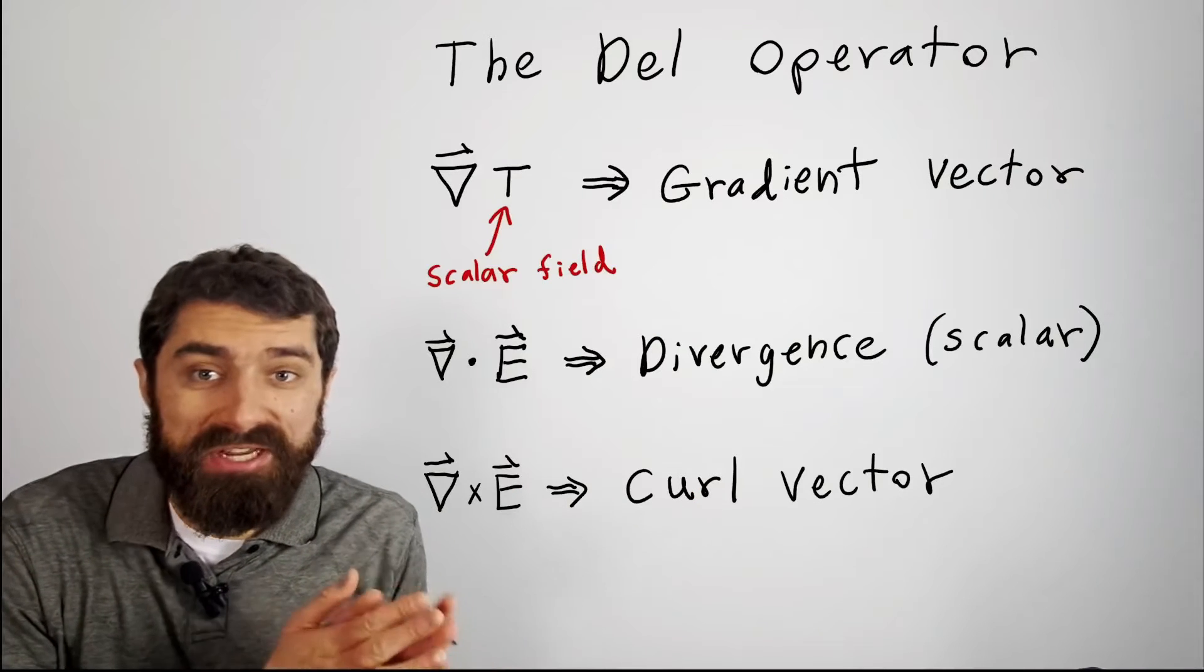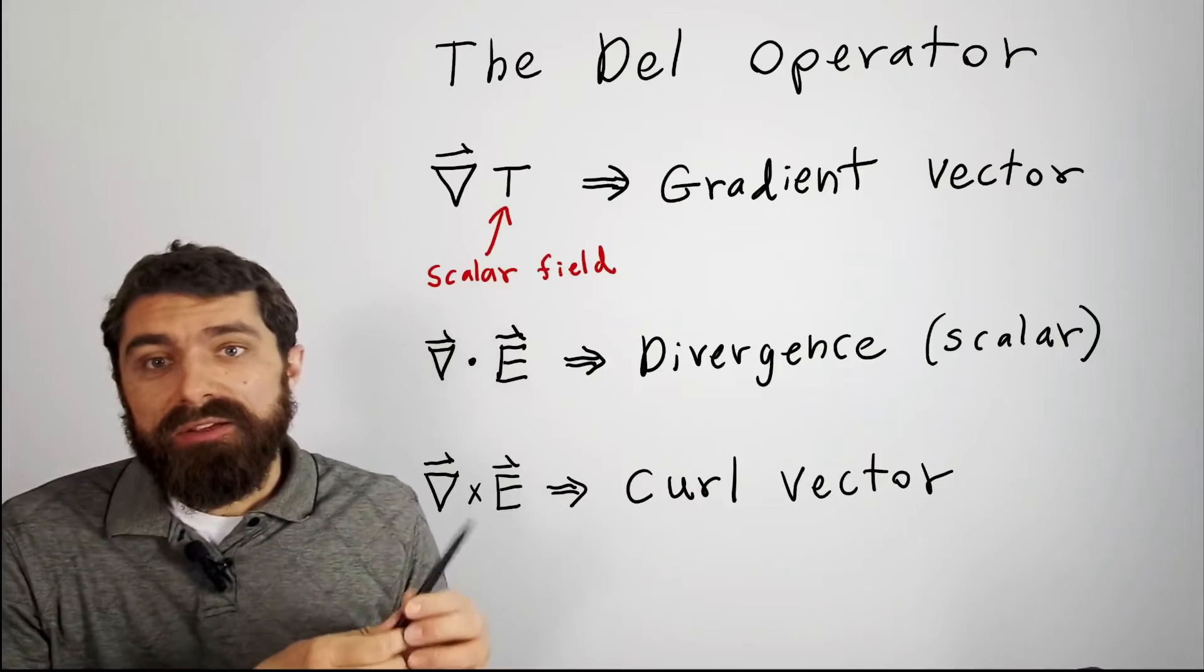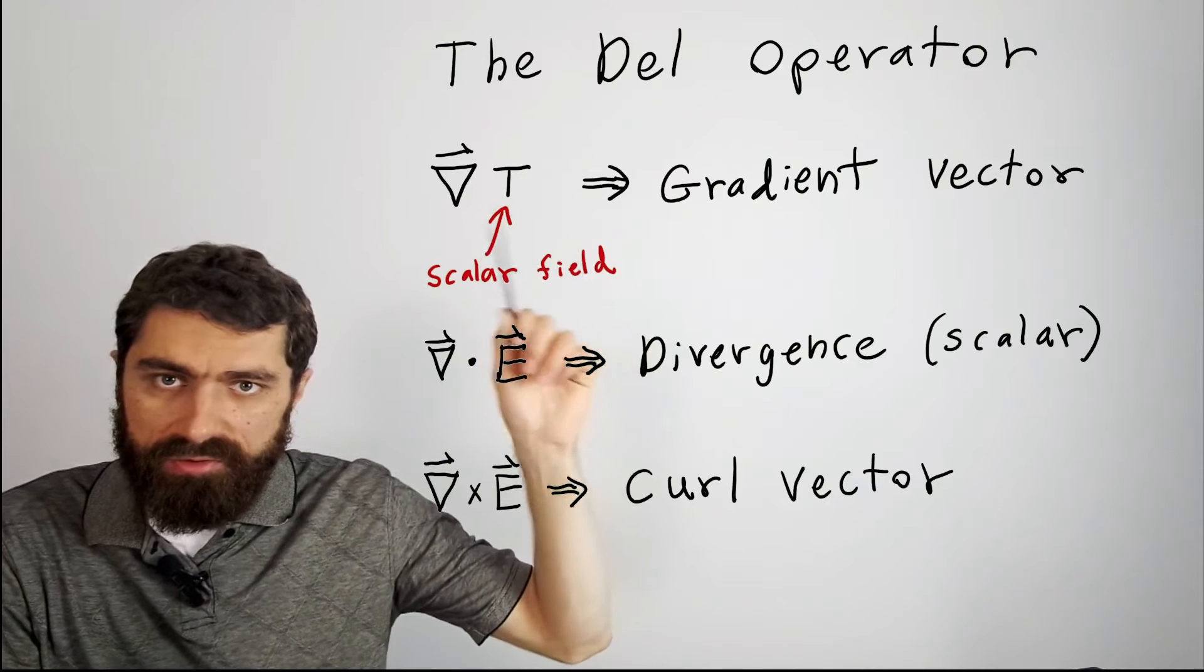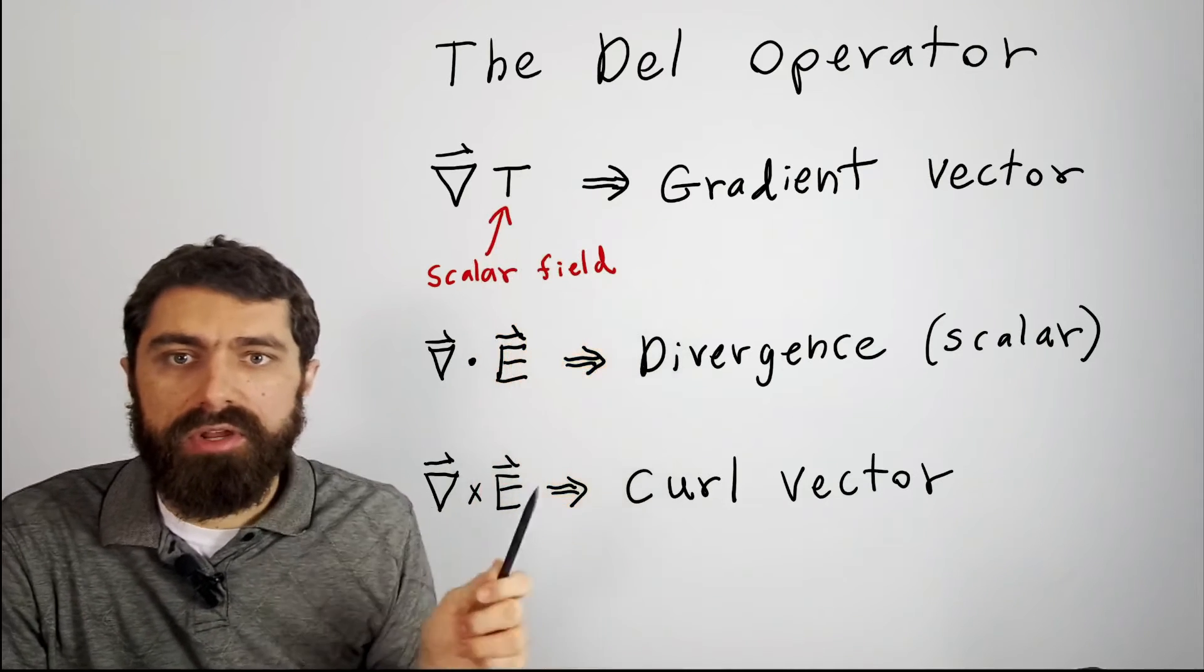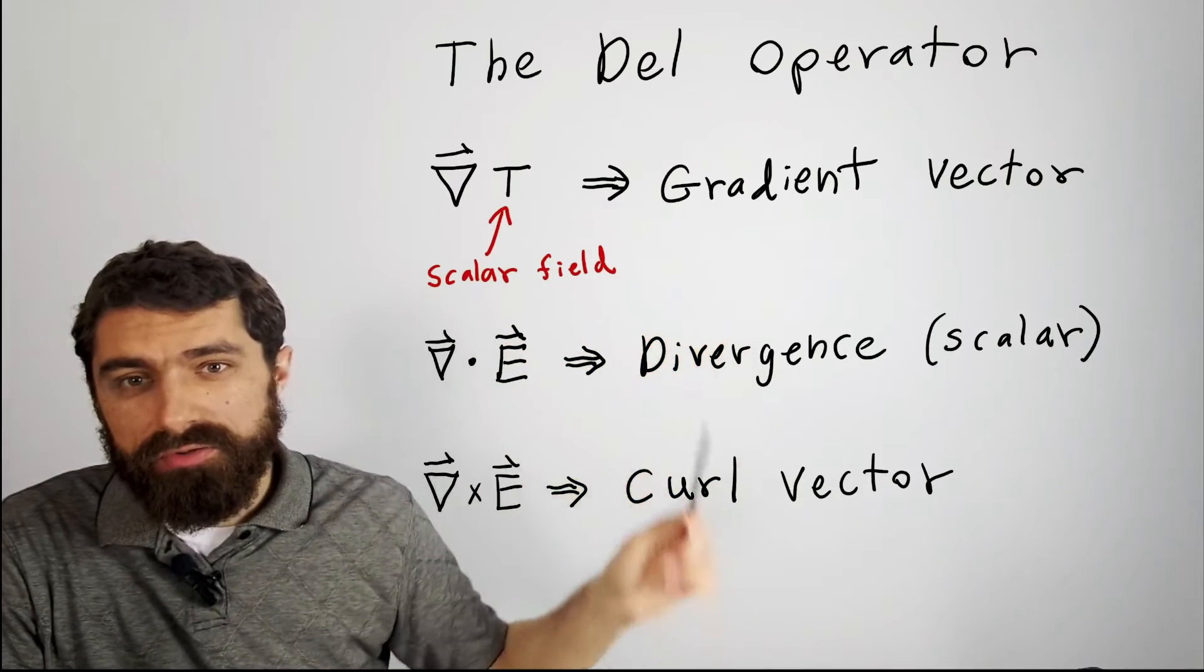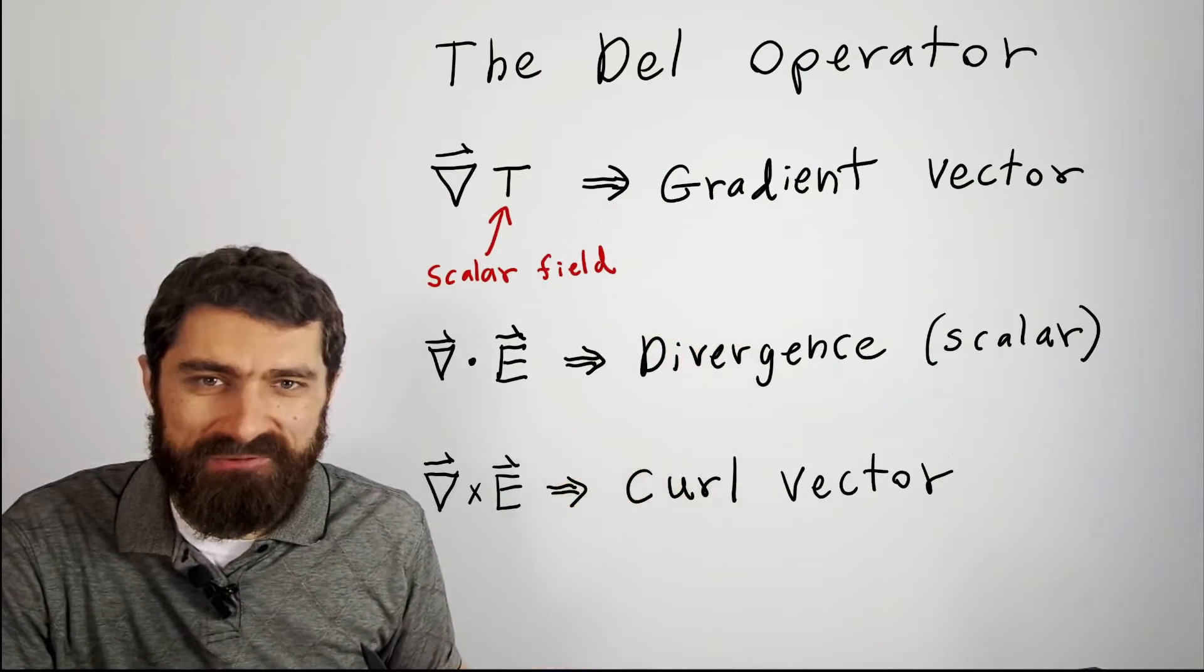All right, with the del operator, you can do a lot of really cool stuff. So depending on whether you apply it with a scalar function, or you dot it, or you take the cross product, these are all called different things because they tell you very interesting things about the field in question.